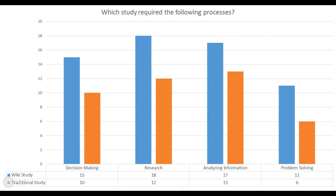This chart shows which study required the most processes, and you can see that the wiki came out on top for decision making, research, analyzing information, and problem solving.